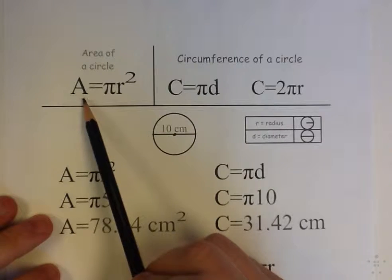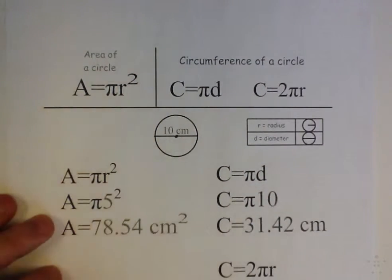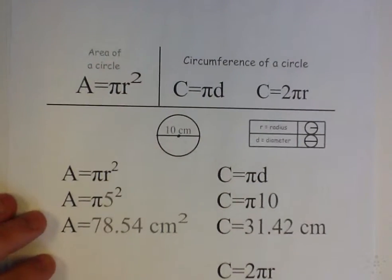Really there's three main formulas that you need to know. Area of a circle: A equals pi times the radius squared. And there's only one formula for area. You'll use that every time.